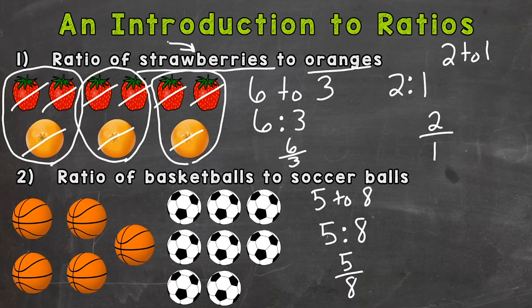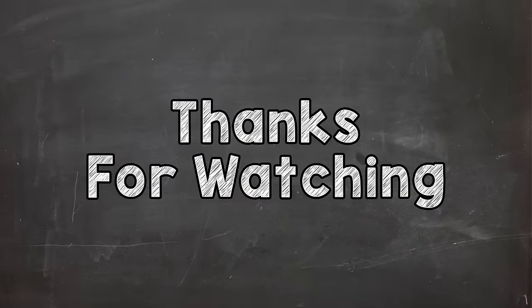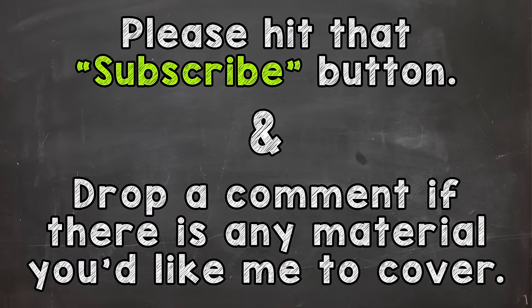And remember, basketballs needed to come first because it came first in our original problem. So there you have it—there's our introduction to ratios. We learned about what a ratio is and then a few different ways we can write ratios out. I will have a few follow-up videos on ratios where we dive a little deeper. I will drop the links to those down in the description. Thanks so much for watching. Until next time, peace.